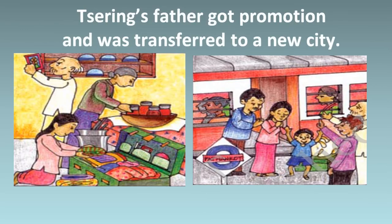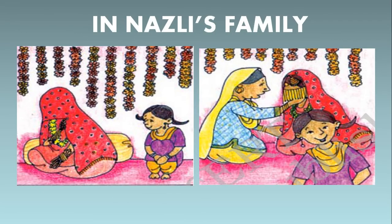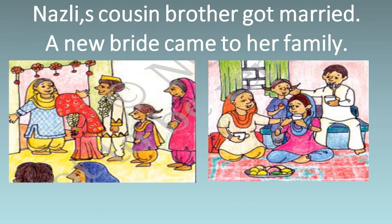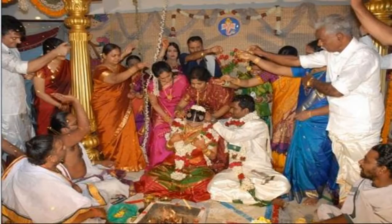Shering's father got promotion and was transferred to a new city. Now let us know about Najli's family. In Najli's family, Najli's cousin brother got married and a new bride came to her family. This is a picture of the marriage of Najli's cousin brother.